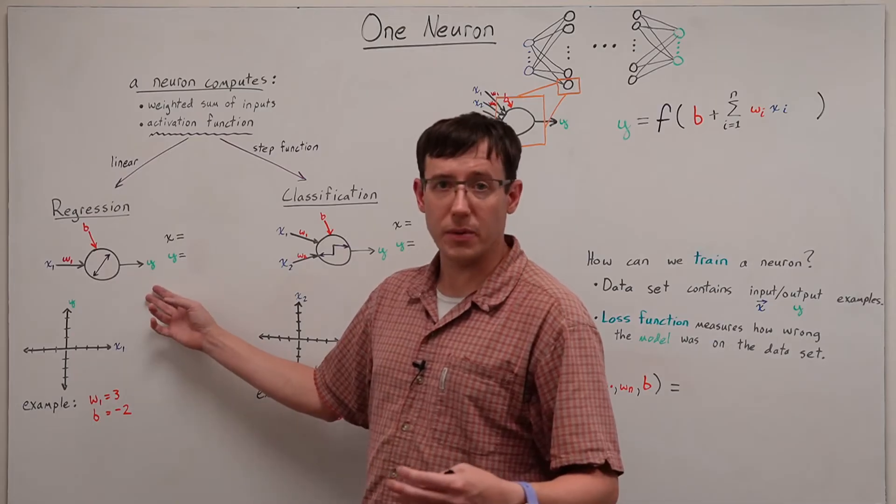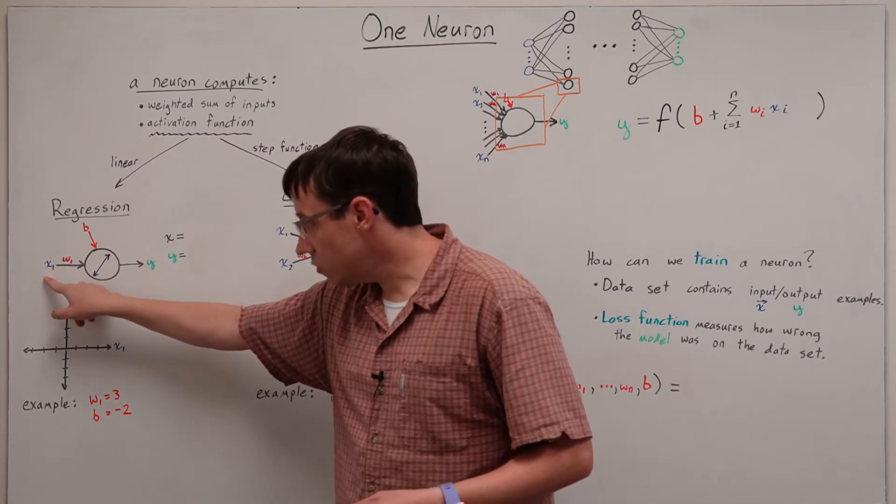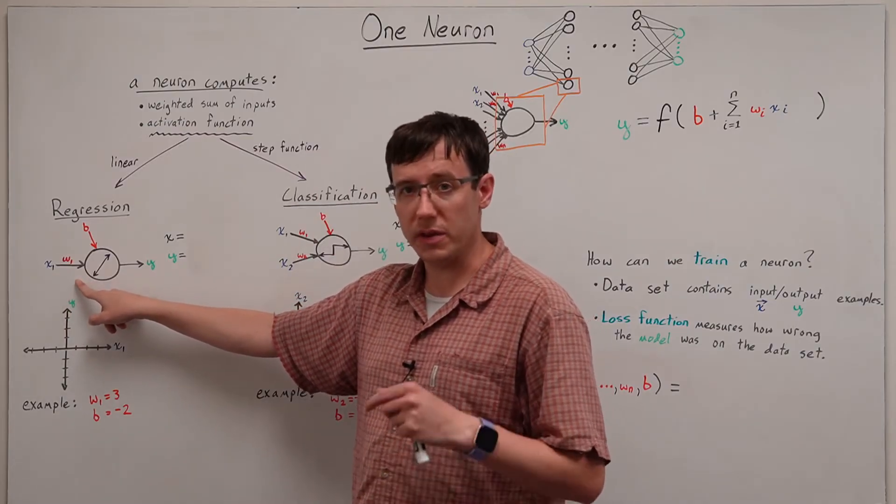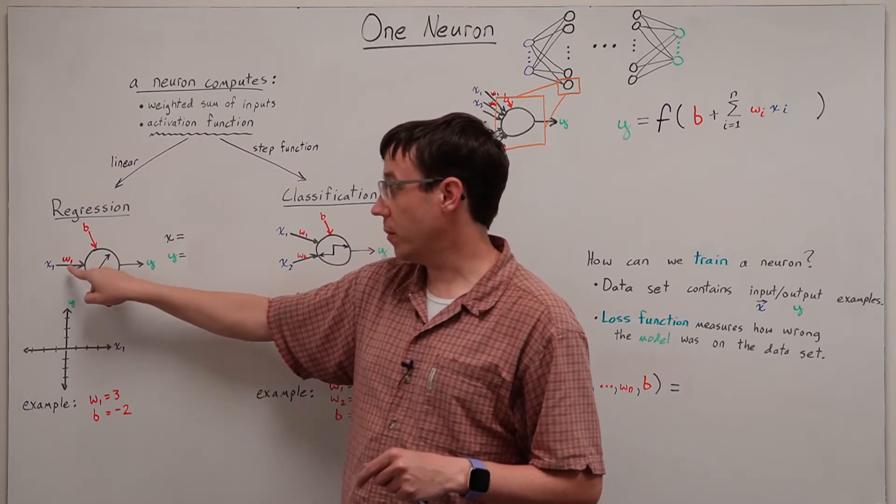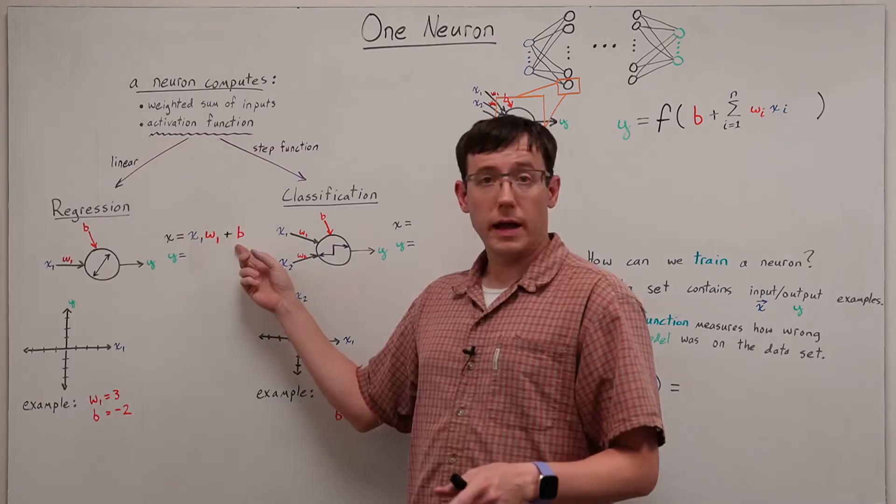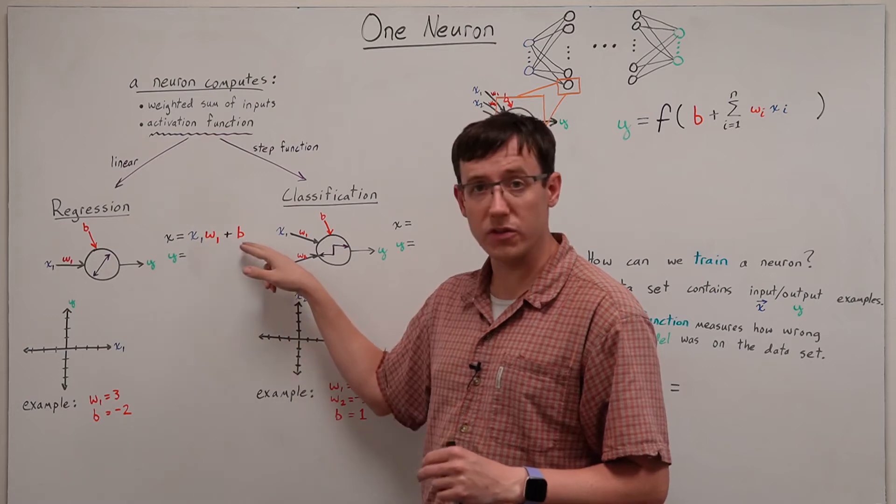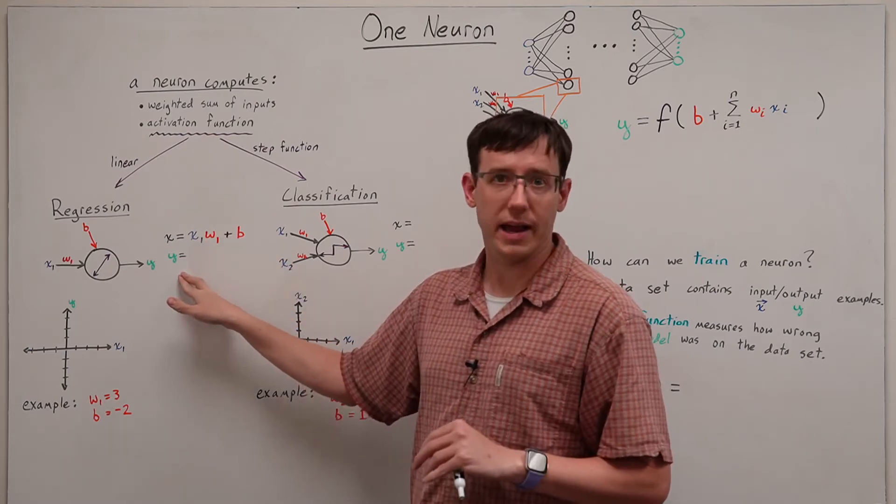In this first example, we have a neuron with a single input, and so the weighted sum of inputs comes from simply multiplying input by weight and adding the bias. And then the linear function I have chosen to go from this weighted sum of inputs to our output is simply y equals x.